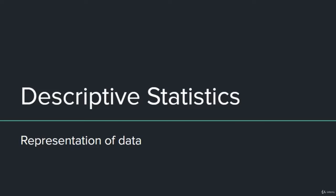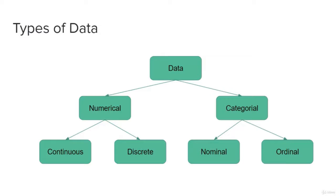Let's talk about descriptive statistics, which is basically used for representation of data. First, let's talk about the types of data. It's important to learn the types of data because later on we will apply operations on the data, and the type of data will ultimately be the deciding factor — whether it is visualization, pre-processing, data extraction, or feature engineering. Different types of data will have different types of operations.